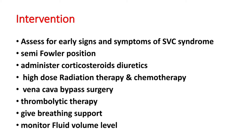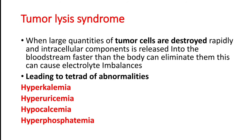A vena cava bypass surgery can be performed to make a bypass for returning deoxygenated blood from the upper body to the heart. Thrombolytic therapy is used if there is any clot formation to break down that thrombus. Breathing support must be given to the patient as they are at high risk of cyanosis, so oxygen is administered and fluid volume levels must be monitored.